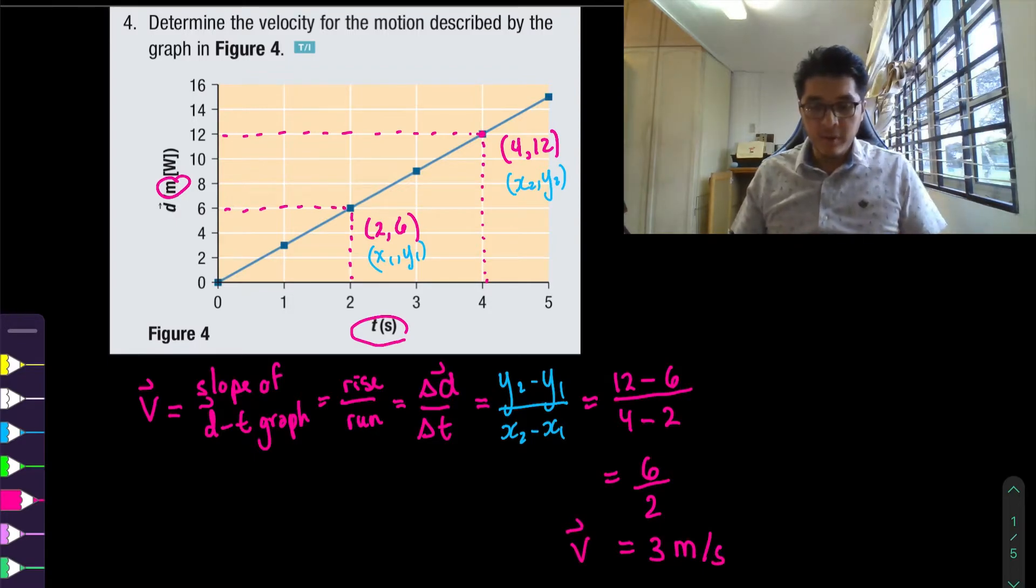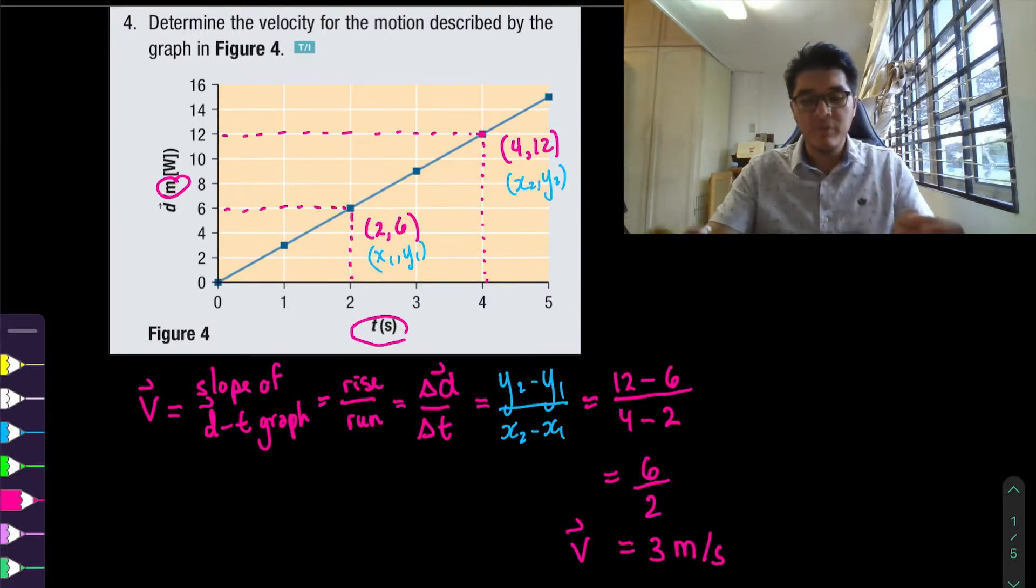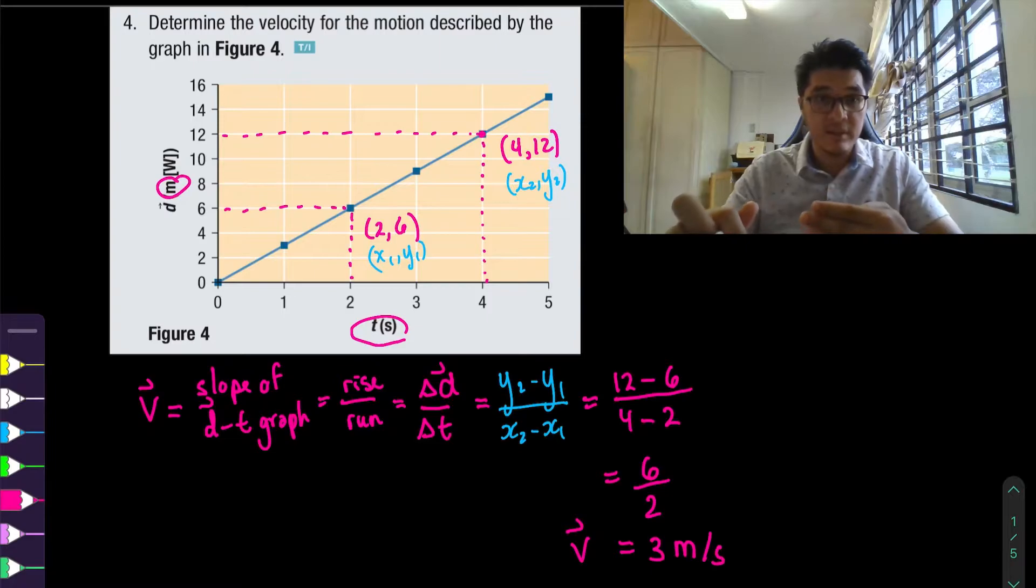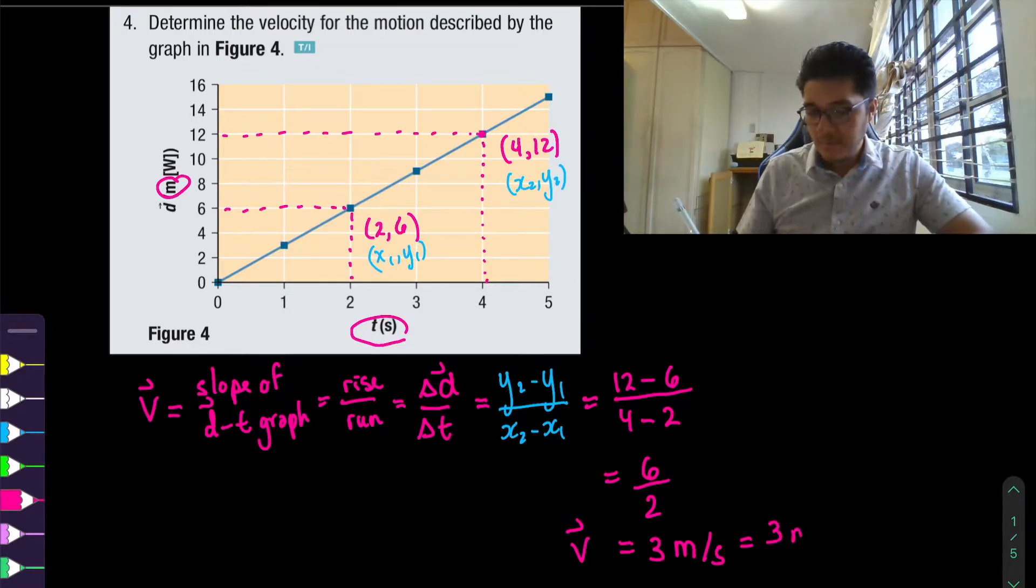And because we got a positive quantity we associate the positive quantity with the positive direction that they have on the graph which is west. Now that's not my favorite thing to always do because I prefer if they keep positive as east and negative as west but this graph is trying to trick us. So here they assume the positive direction is the west direction.